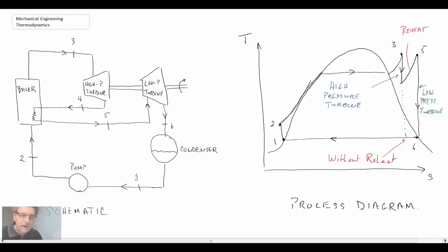What we have here is the process schematic as well as the process diagram for the Rankine cycle with reheat. And we can see in comparison to the Standard Rankine, we have a few changes. One of them is we now have both a high pressure and a low pressure turbine. We didn't have that before.